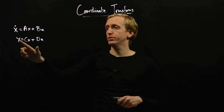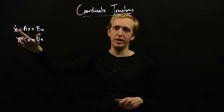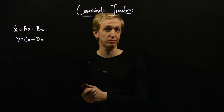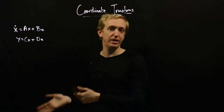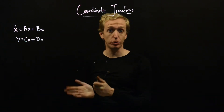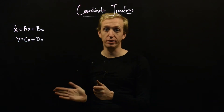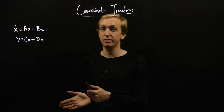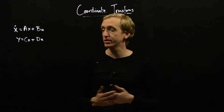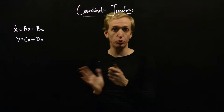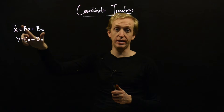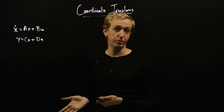A state-space model goes from inputs to outputs, but on the way you go through this intermediate internal variable x, which is the system state. But that never appears in the output. In fact, the choice of state is not unique. We can come up with other choices of the state, and maybe certain choices have certain advantages in certain situations. We're going to talk about coordinate transformations in terms of the state x, which might have certain beneficial properties.